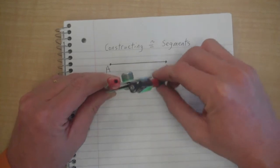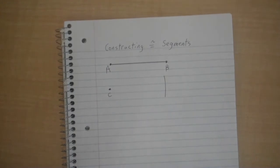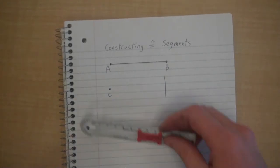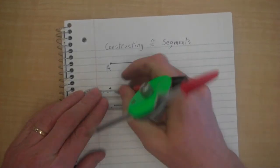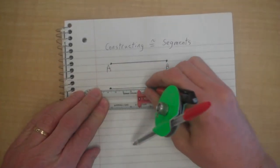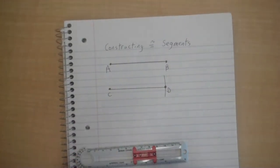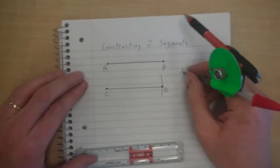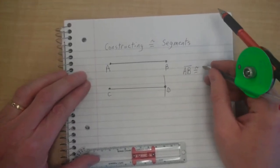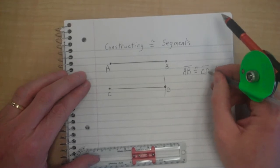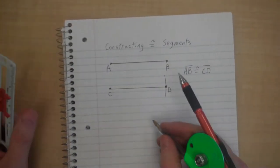Then it's simply a case of getting your straightedge out and drawing from C to your arc D, and we have constructed segment AB congruent to segment CD.